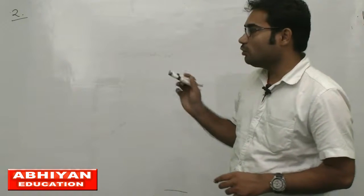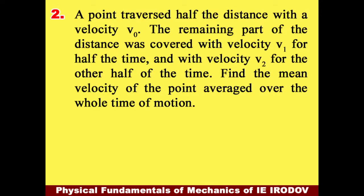In this video we discuss question number 2 of I.E. Irodov. A point traveled half the distance with velocity v0. The remaining part of the distance was covered with velocity v1 for half the time and with velocity v2 for the other half of the time. Find the mean velocity of the point averaged over the whole time of motion.